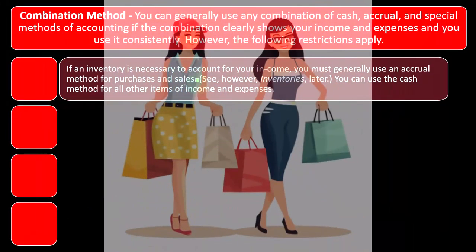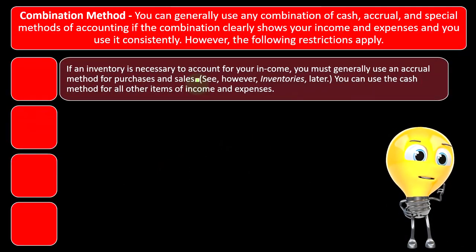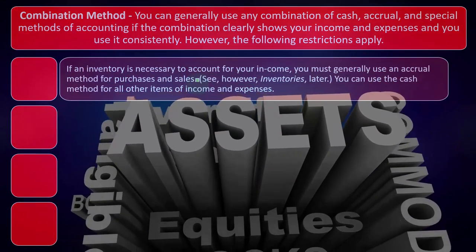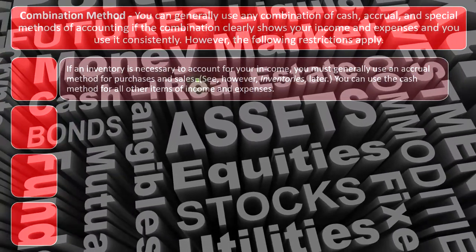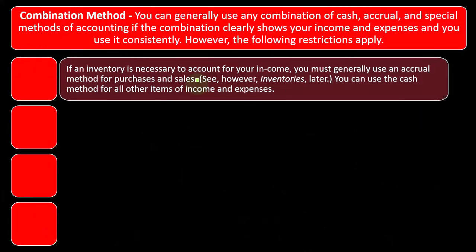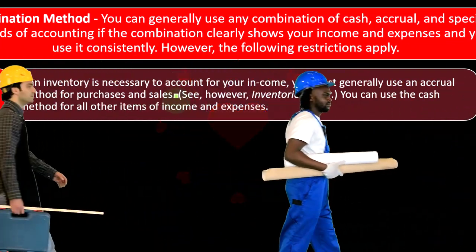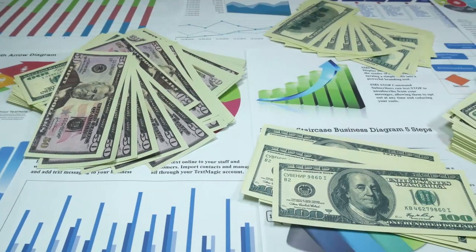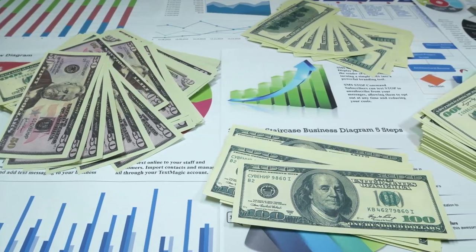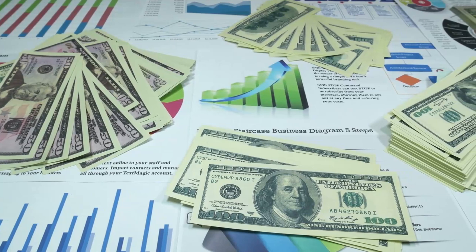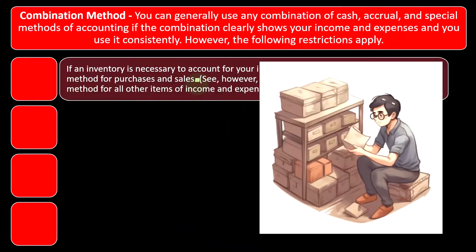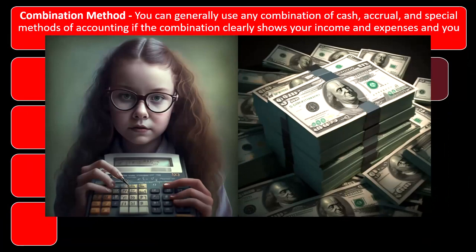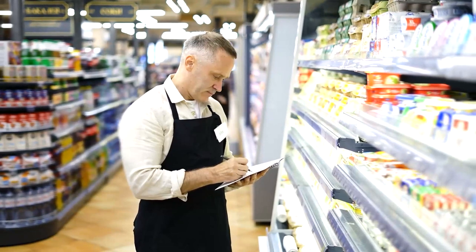When you buy inventory, if you were on a cash method, you would just expense it when you buy it. But if you're holding onto a substantial amount of inventory, it makes sense to put it on the books as an asset — and putting it on the books as an asset is an accrual-type thing. We then expense it when we sell the inventory in the form of cost of goods sold, matching the cost of inventory sold with the timeframe that you earned the revenue. Otherwise, if you expensed it two years ago when you bought it, you're not matching that expense to the revenue generated in the current year when you actually sold it. We want to match those two things up.